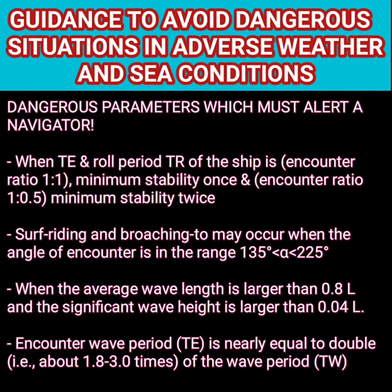If you are heading north, any wave coming from the southeast to southwest quarter creates a risk of surf riding and broaching to. When the average wavelength is larger than 0.8 times the length between perpendiculars, or when the significant wave height is larger than 4% of the ship's length, it is again a dangerous situation. Finally, if the encounter wave period is nearly equal to double the wave period — which can only occur when the ship's speed is quite high — that is a dangerous situation. If the encounter wave period is anywhere between 1.8 to 3 times the wave period, you are in a dangerous zone.